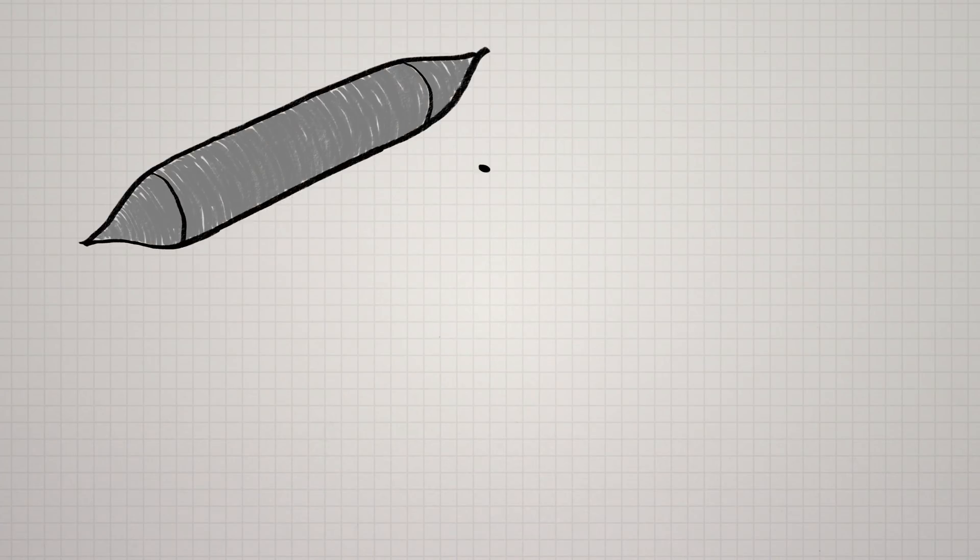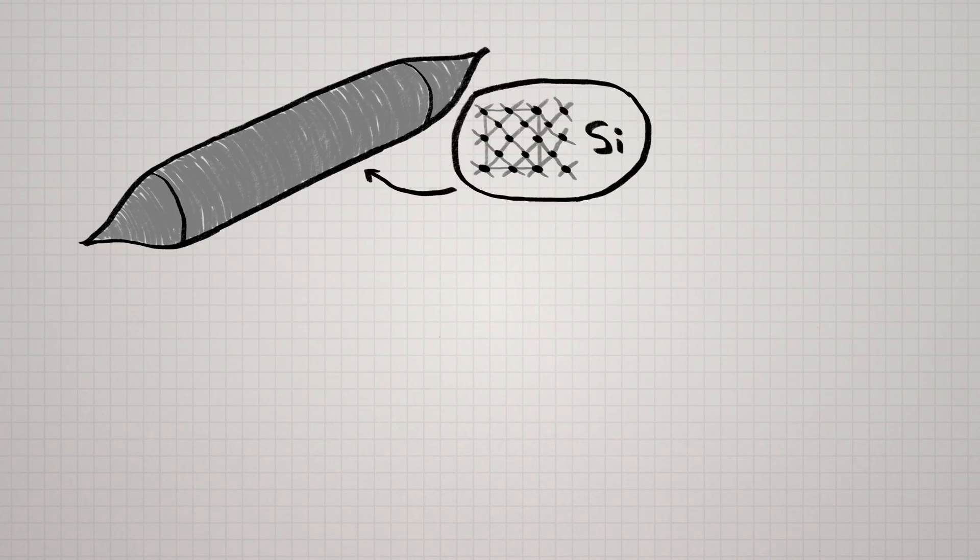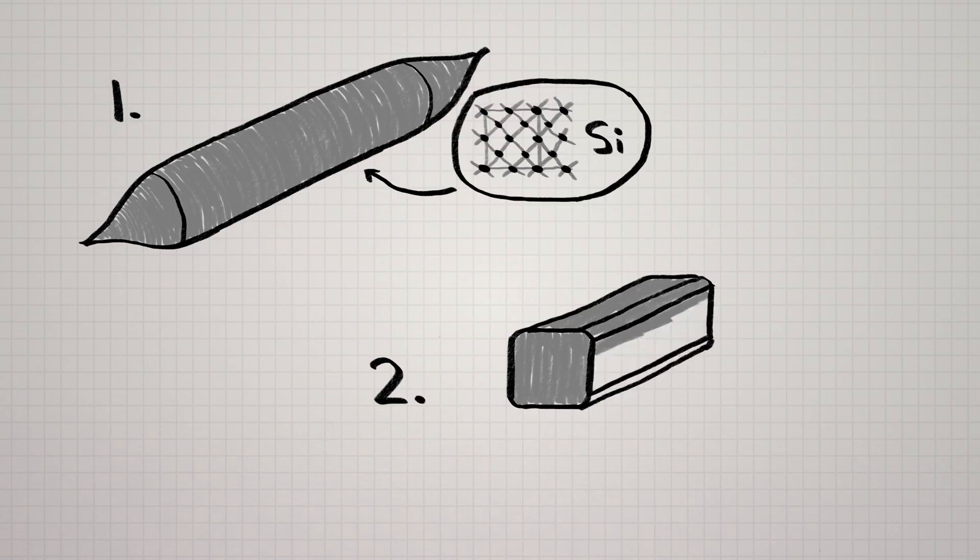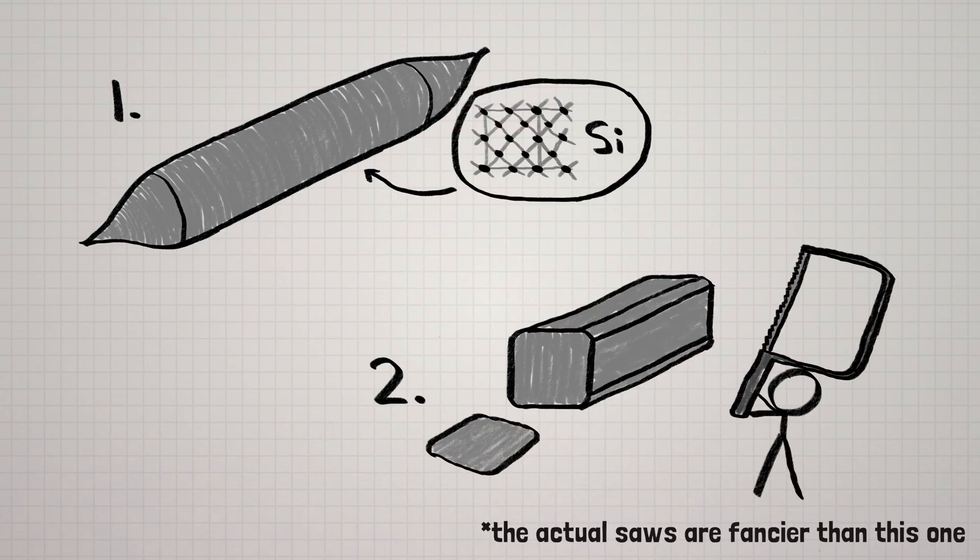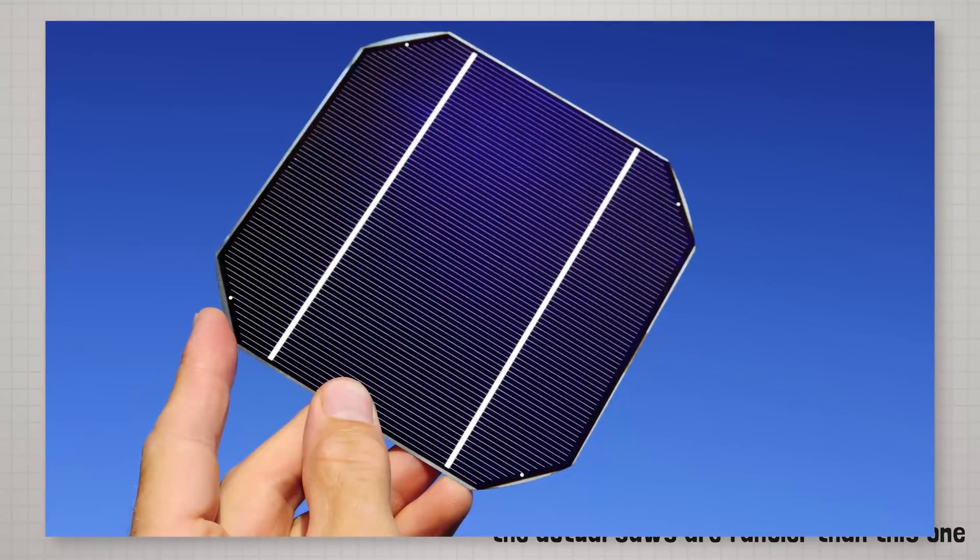Okay, so a typical solar panel cell begins as a carefully grown cylinder of silicon atoms arranged in a regular crystal lattice, which are then trimmed and cut into wafer-thin wafers, some of which retain curved corners as hallmarks of the original cylindrical crystal.